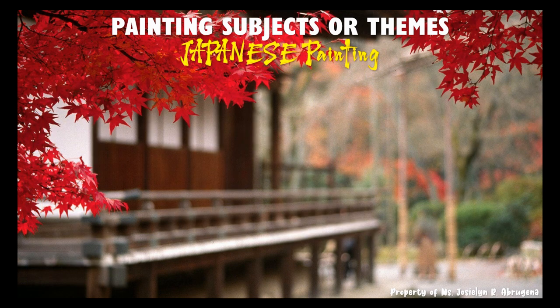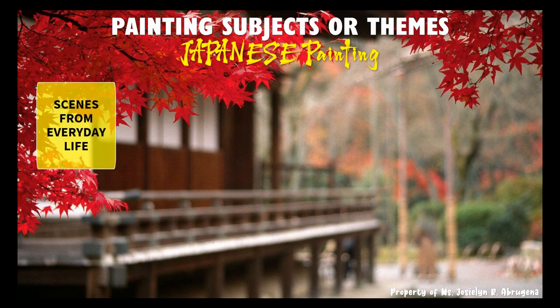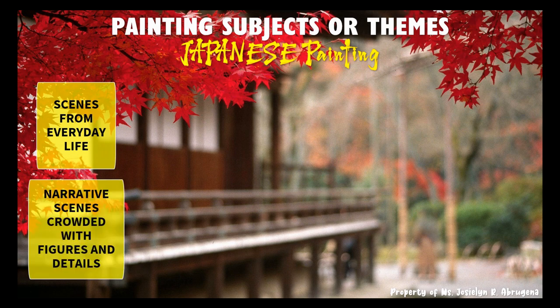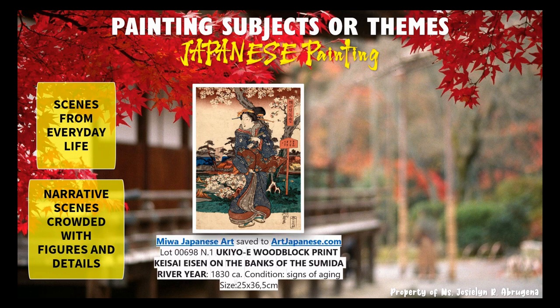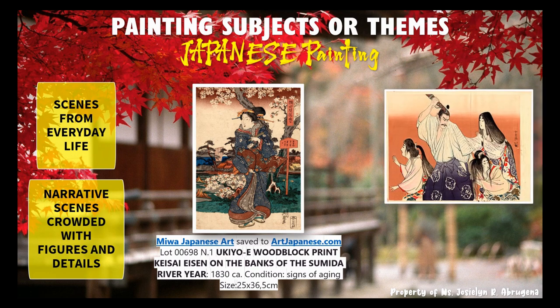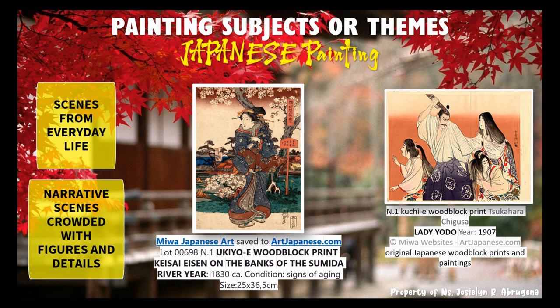The following are the Japanese painting subjects or themes: scenes from everyday life, and narrative scenes crowded with figures and details. The first example is the Miwa Japanese art, the Ukiyo-e woodblock print by Keisai Aizen on the banks of the Sumita River, year 1830. The second example is the Ukiyo-e woodblock print by Tsukahara Chigasa entitled Lady Yaoto, year 1907.